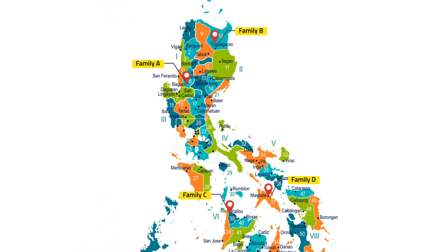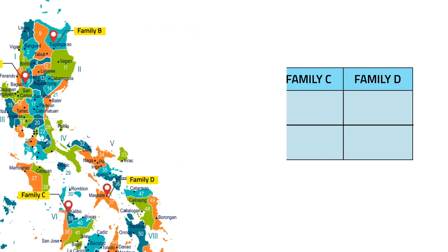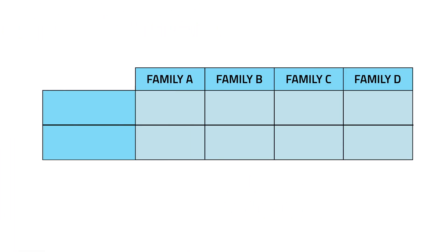Does the distance and time of travel show direct variation? First, let's make a table. We'll label the first row as distance in miles and the second row as time of flight in hours.